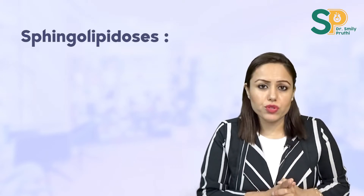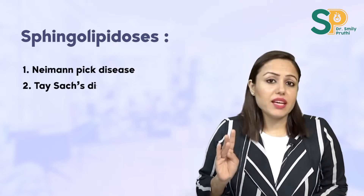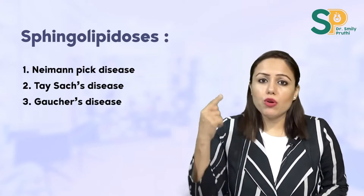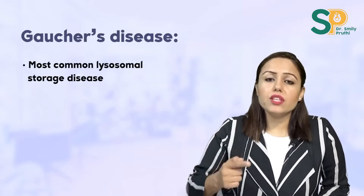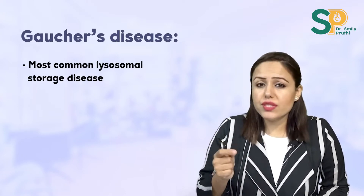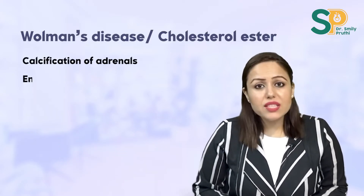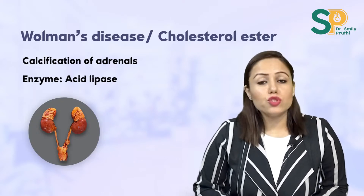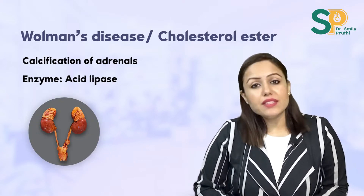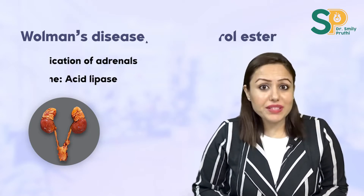Read all enzyme deficiencies in sphingolipidoses — Niemann-Pick disease, Tay-Sachs disease, Gaucher's disease. Out of all these, Gaucher's disease is the most common, and also the most common lysosomal storage disease. Its typical feature is crumpled tissue paper appearance of macrophages. In lipids, also do Wolman's disease — known as cholesterol ester storage disease — with characteristic calcification of adrenals; the deficient enzyme is acid lipase.